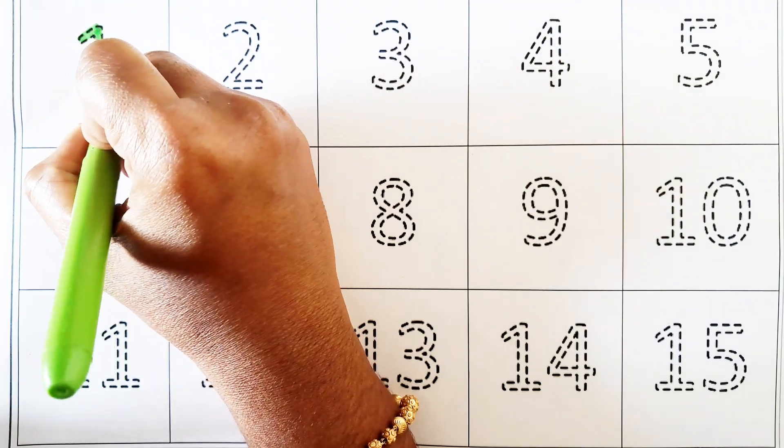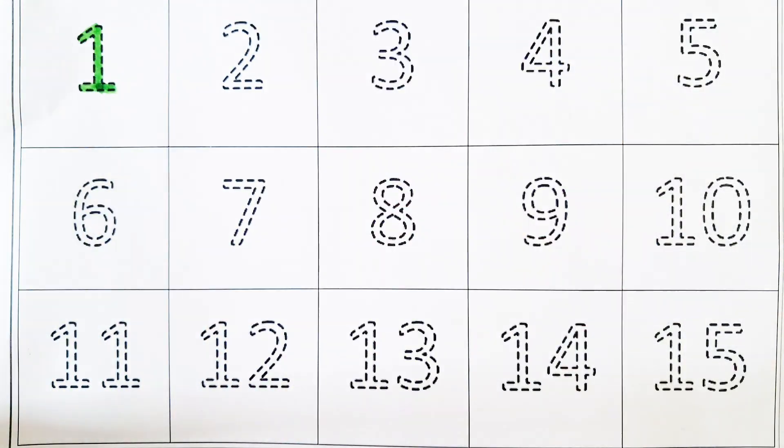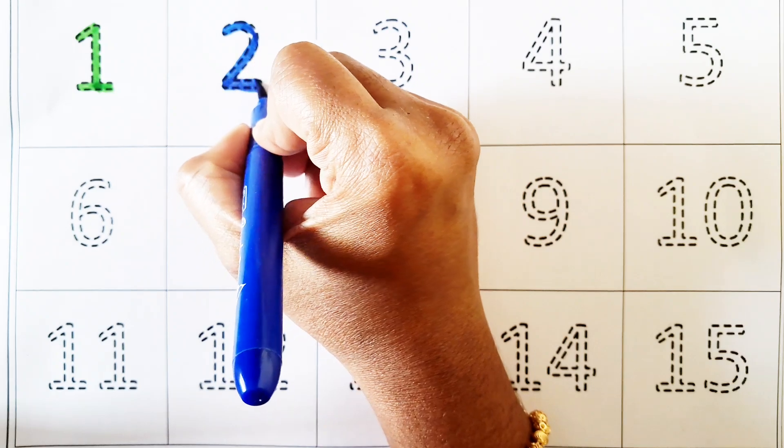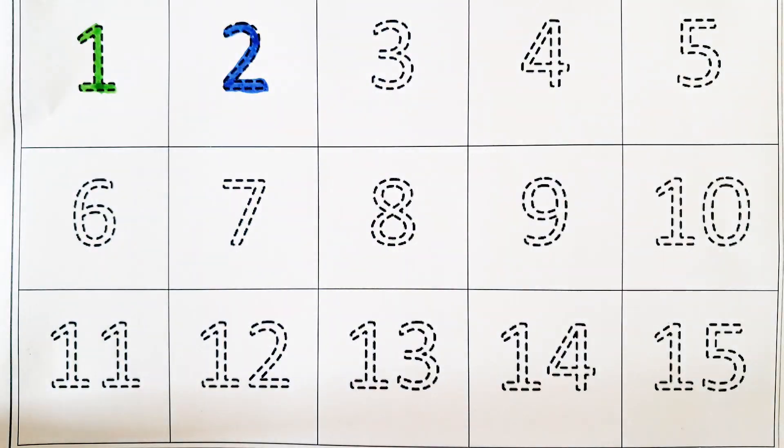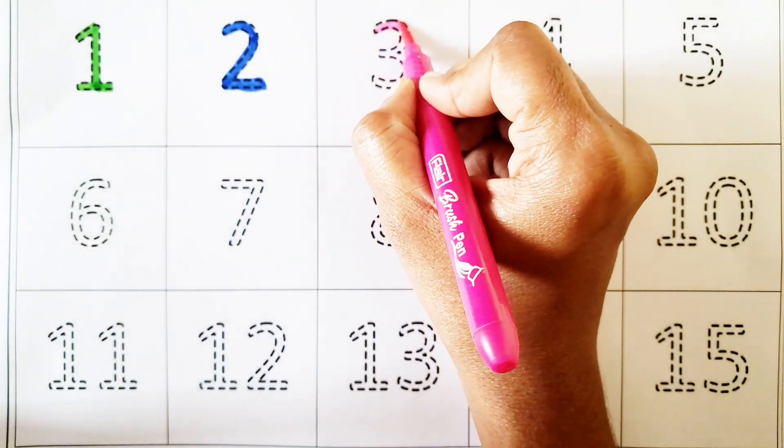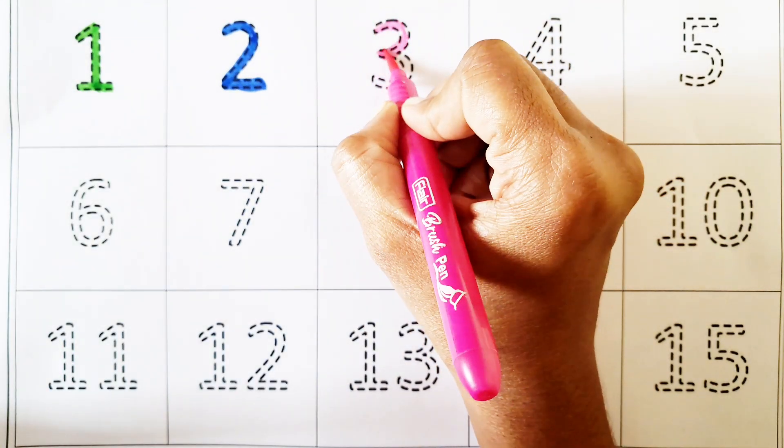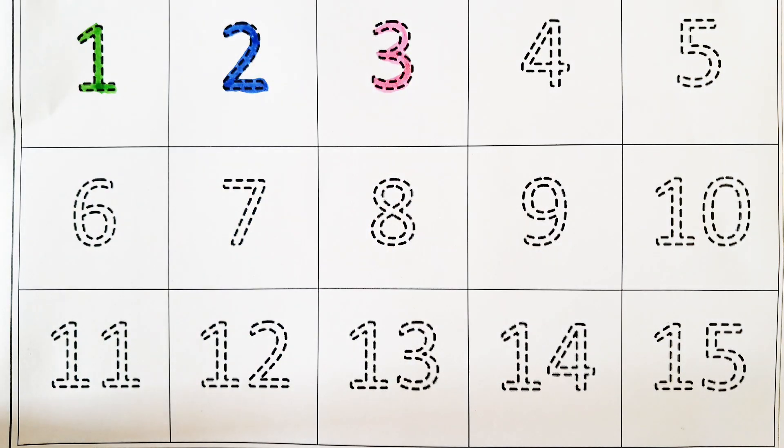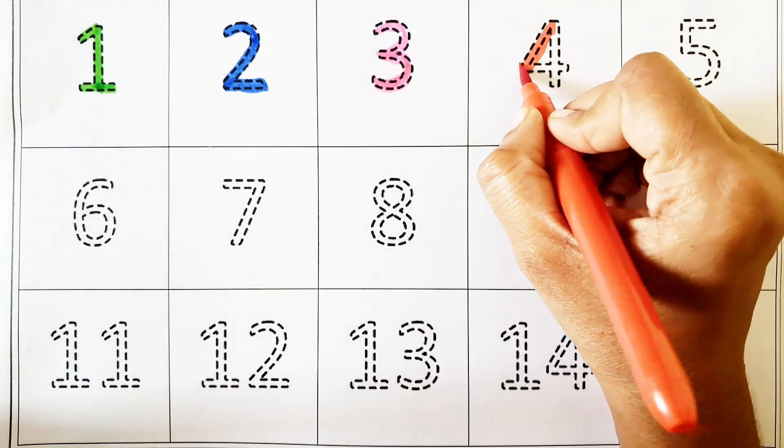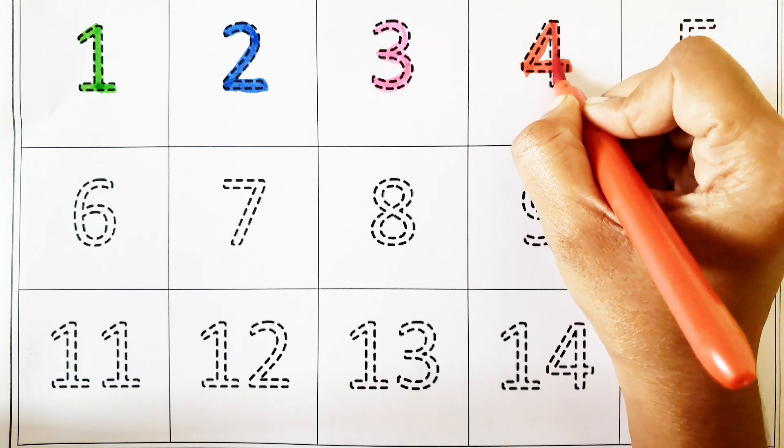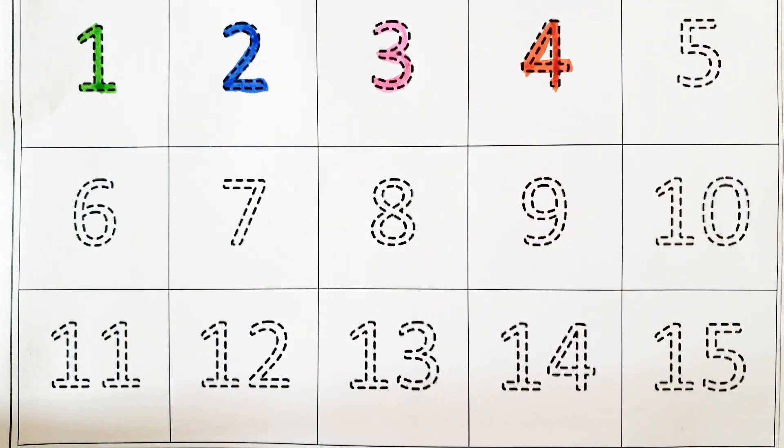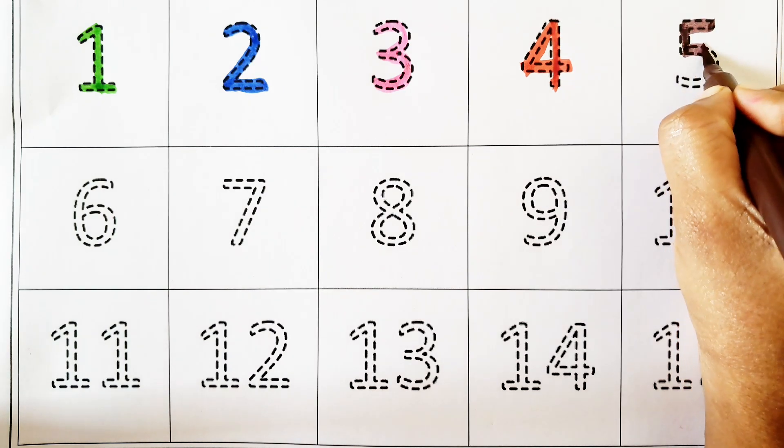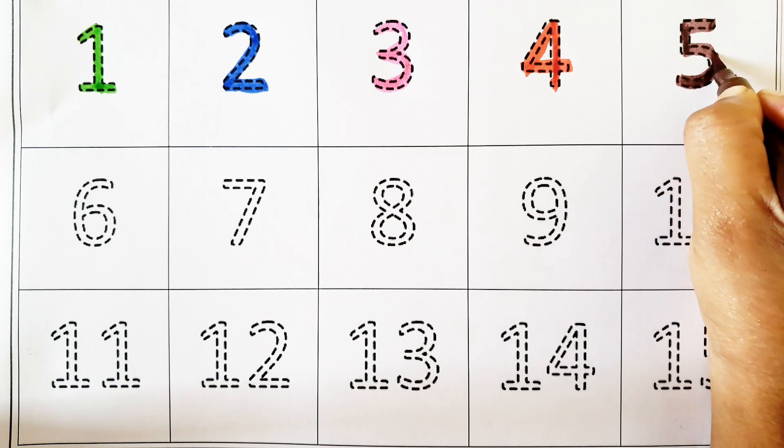One, O-N-E. Next number 2, two, T-W-O. Next number 3, three, T-H-R-E-E. Next number 4, four, F-O-U-R. Next number 5, five, F-I-V-E.